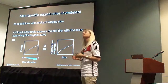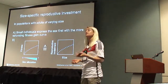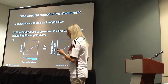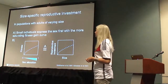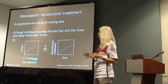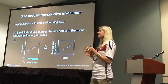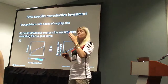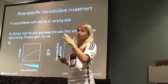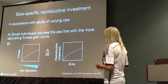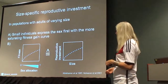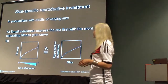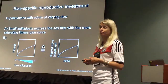We may think that size-specific reproductive investment is a kind of workaround to the problem. It occurs in populations with adults of varying size, and basically means that sex allocation varies between small and large individuals. There are several other assumptions that need to be met for this to be true, which I won't go into now. However, there are two rules we can derive from this: first, small individuals express the sex first with the more saturating fitness gain curve, because if you are small, you have fewer resources overall to allocate to reproduction, so you want to allocate them into the function with the largest fitness gains. Second, the fitness gain curve and size-specific reproductive investment curve should be of similar shape — a saturating fitness gain curve should result in a saturating size-specific reproductive investment curve.